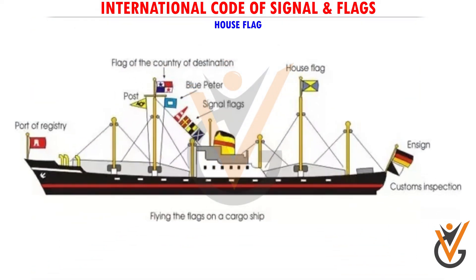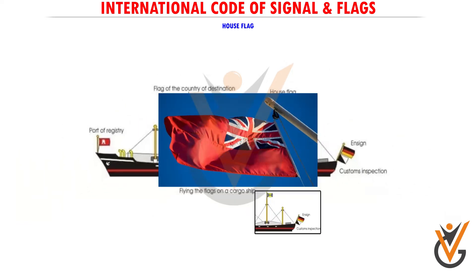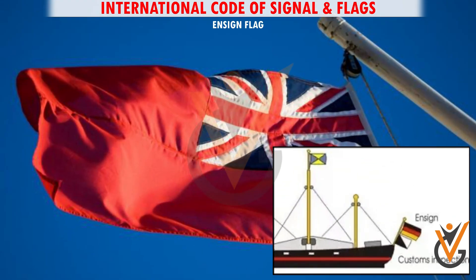House Flag — this is the company flag, which is flown on the main mast port outer halyard. This flag is also hoisted prior to arrival into port. Ensign Flag — this is the flag of the country in which the ship is registered, and it is hoisted on the ensign staff, right aft. This flag should not be allowed to fall to the ground.